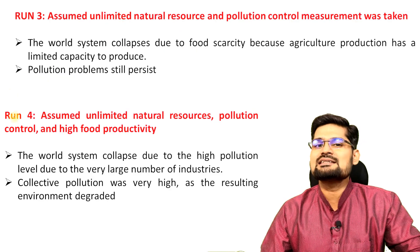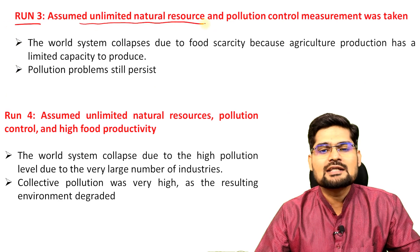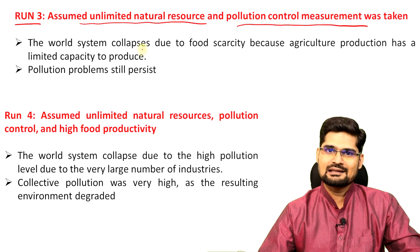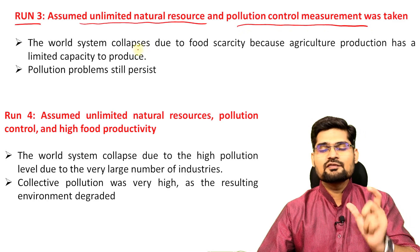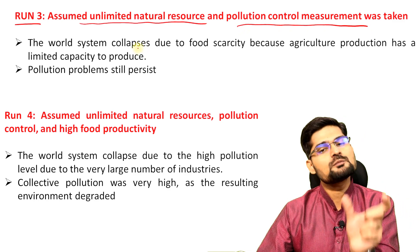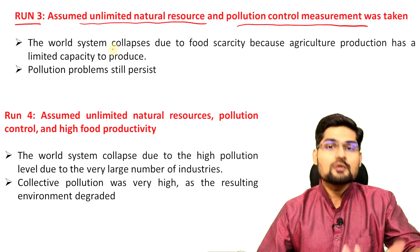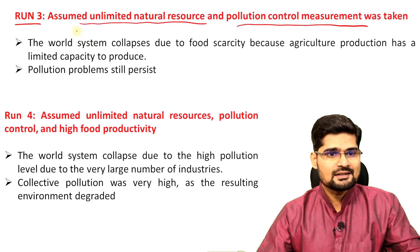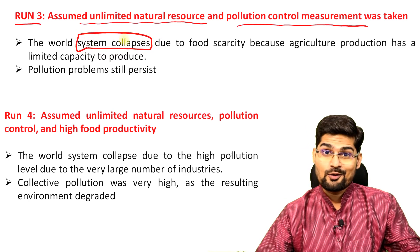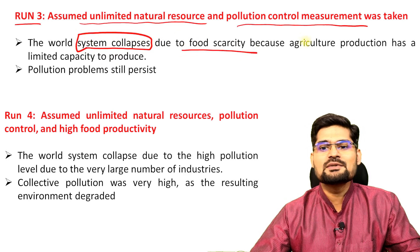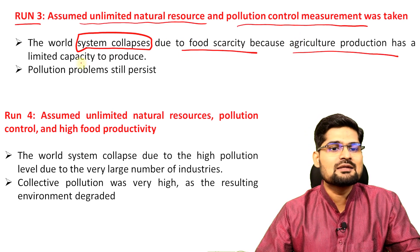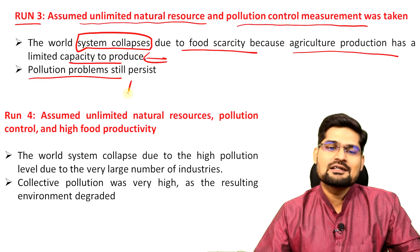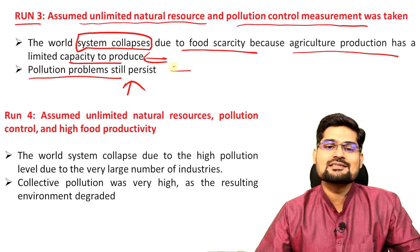The third run assumed unlimited natural resources and pollution control mechanisms. If we assume infinite resources and also pollution control, what is the resultant? The world system still collapses — due to food scarcity, because agricultural production has a limited capacity to produce. Pollution problems will still persist and there is still a collapse.